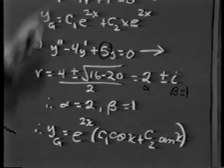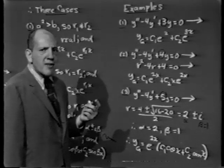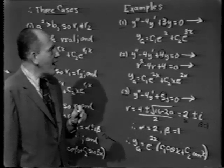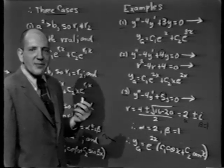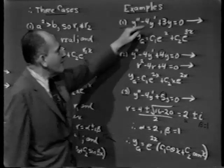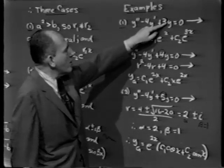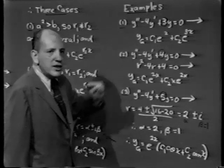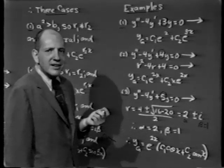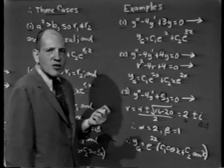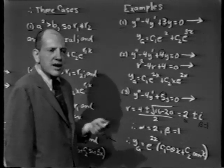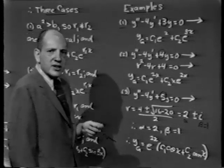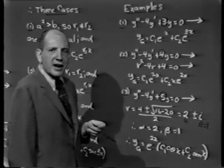Notice how subtle this is: all three equations are identical except for the coefficient of y — which was 3, then 4, then 5. Yet in one case we got two real unequal roots; in the second, real but equal roots; and in the third, non-real complex conjugates. That's all there is to this lesson, except for showing why the recipes work.